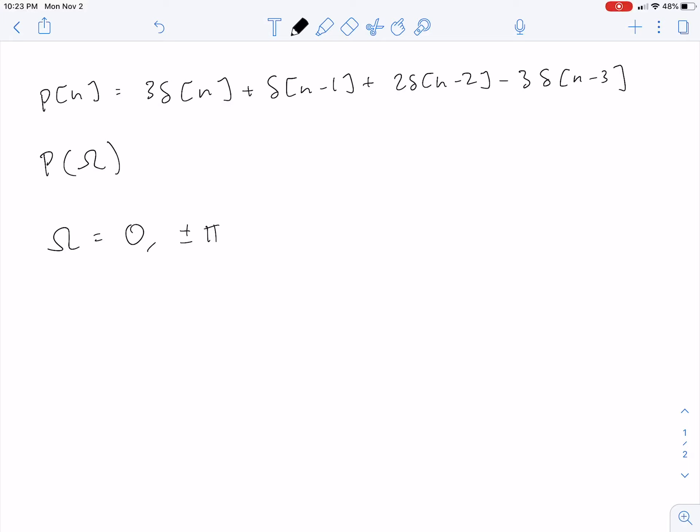And I'll show you why using our formula. So P of omega equals sum over all k of P of k e to the negative j omega k. If omega equals zero, this becomes just the sum of P of k, since e to the negative j zero times k is one.